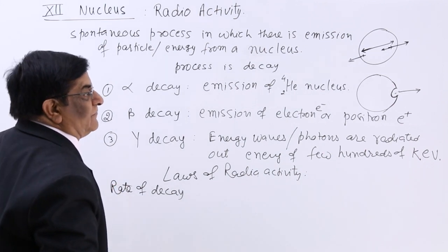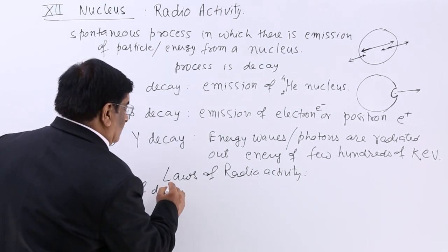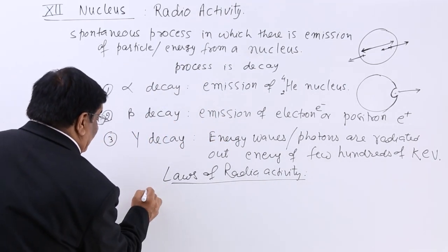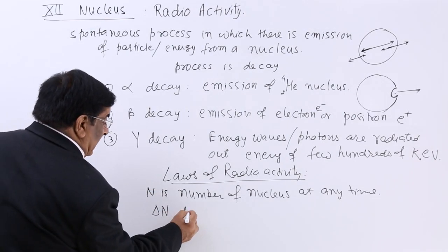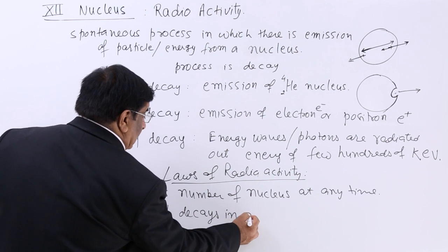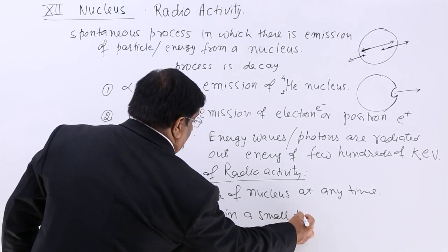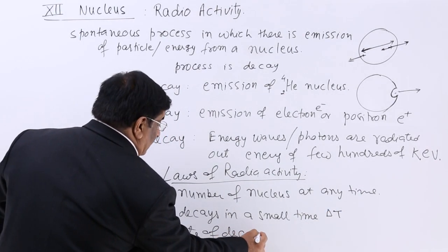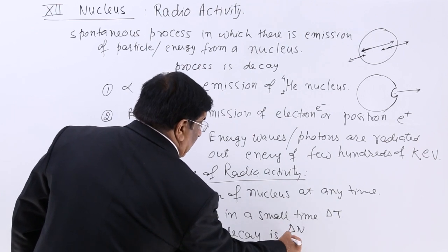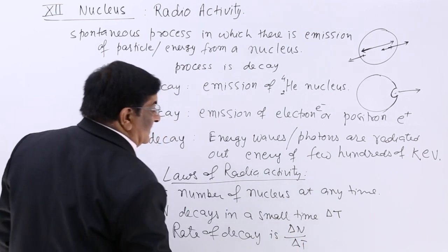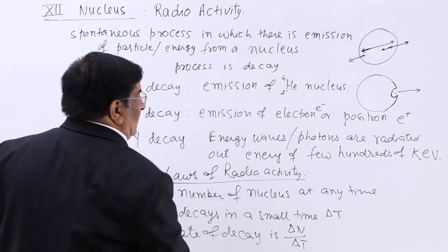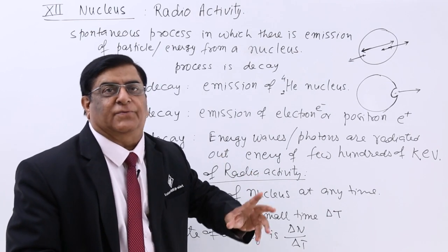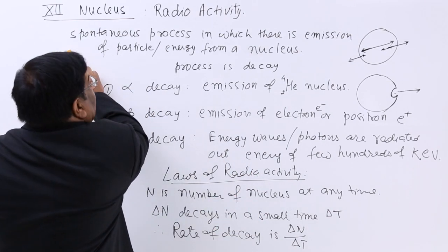We make a notation for rate of decay. N is the number of nuclei at any time. Delta N is the number of decays in a small time delta T. Then the rate of decay is delta N divided by delta T. This rate of decay is proportional to the total stock of nuclei present.